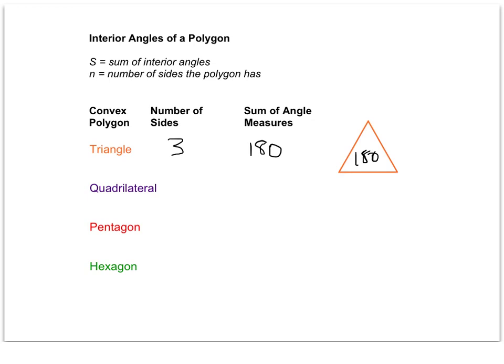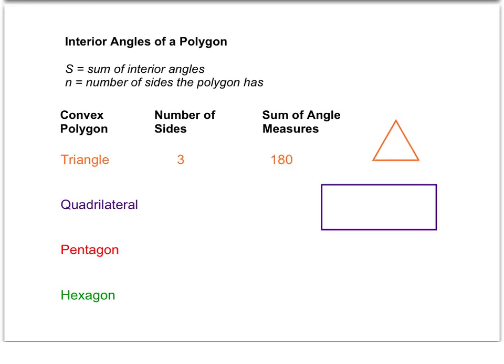If we move on to a quadrilateral, it might not be as well known the sum of the angle measures of a quadrilateral, but we can, by creating triangles inside this polygon, going from vertex to vertex, create two triangles.